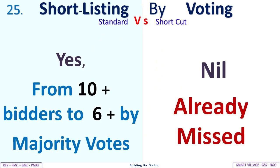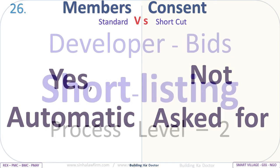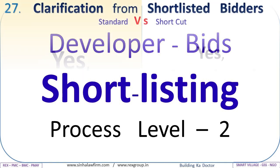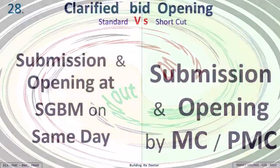Shortlisting by voting: Standard shortlists from 10-plus bidders to 6-plus by majority votes; shortcut has nil — already missed. Members' consent: Standard — automatic; shortcut — not asked for. This begins developer bids shortlisting process — Level Two. Clarification from shortlisted bidders: Standard covers missed-out points among 500 FTGL; shortcut covers only one missed-out FT and 50 points clarified.